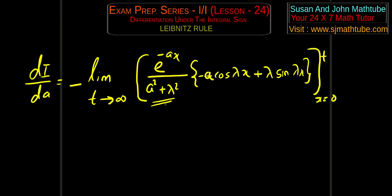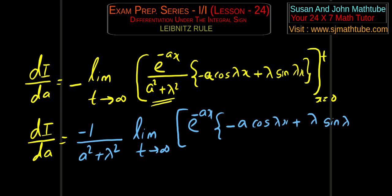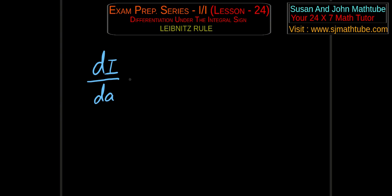So this thing comes outside. dI/da is equal to — I am going to make it a little bit colourful — 1 by a squared plus lambda squared, times limit t tends to infinity of e to the power minus ax times minus a cos(λx) plus lambda sin(λx), within the limit x equals 0 to t. Now it is a usual story. You plug in upper limit; with limit t tends to infinity, e to the power minus infinity will be 0 and these are finite numbers, so that is going to be 0. But in the exam there will be only one question, so make sure you write that. dI/da equals a by a squared plus lambda squared.